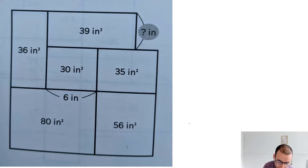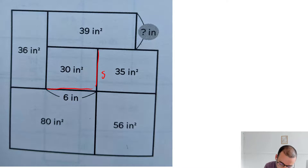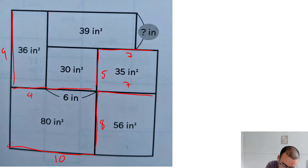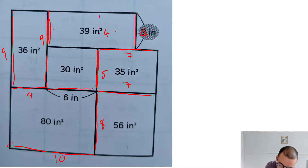Remember to be pausing it and trying these yourself. Level one — you should be trying in your head. We've got six times five. Five times seven is 35, so this is seven. Seven times eight is 56. Eight times 10 is 80. If this is 10 and this is six, this one here is four. Four times nine is 36, so this whole bit is nine. We know that this bit is five, so this bit is four — because four plus five gives me that length of nine. The answer is four.